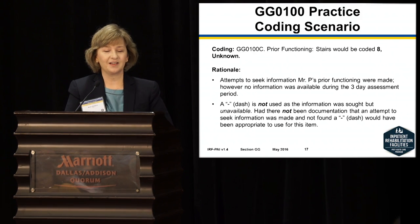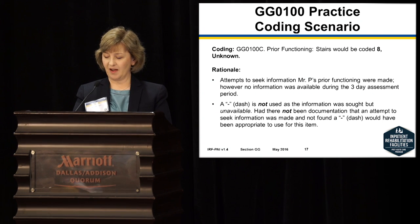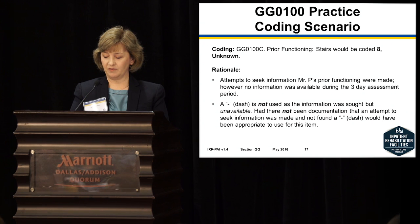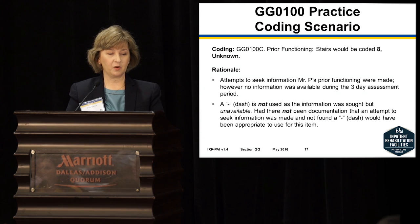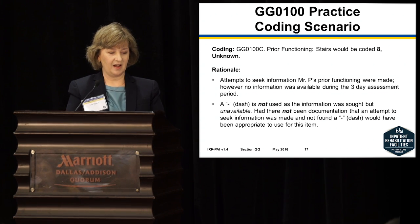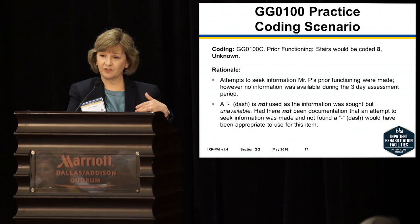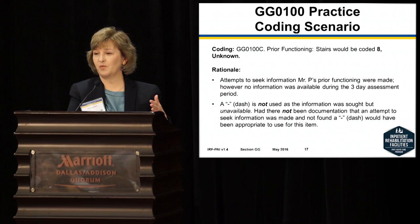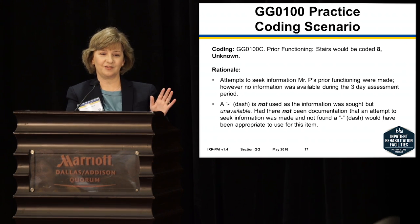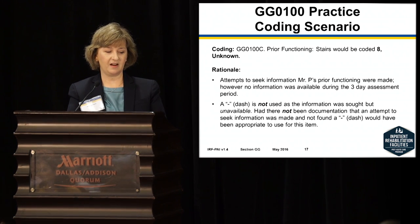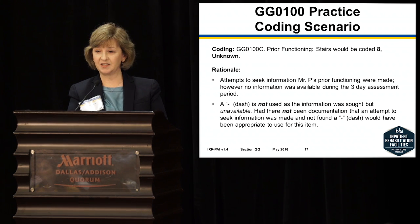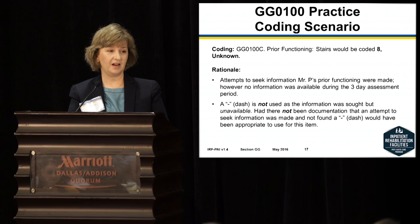For the stairs example, the correct code is 8 unknown. A dash is not used because the information was sought but not available. Had there been no documentation and no attempt to get the information, then a dash would have been used. The four areas within the prior functioning section are self-care, indoor mobility and ambulation, stairs, and functional cognition.